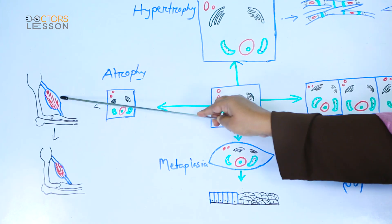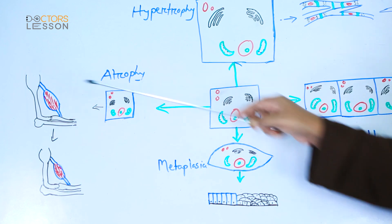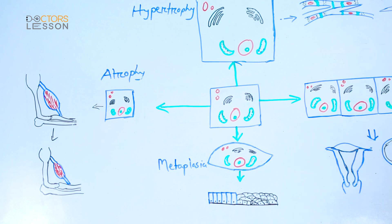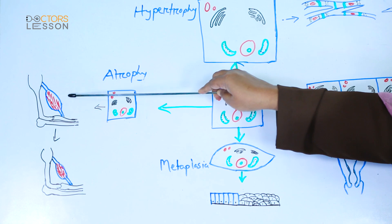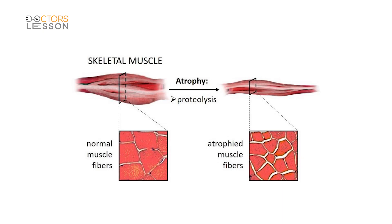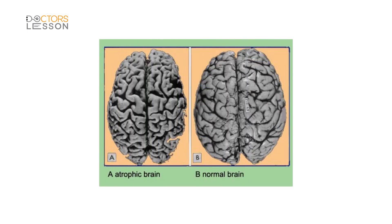Decreased workload causes skeletal muscle atrophy due to prolonged disuse, as seen in immobilized patients with a plaster cast — skeletal muscle fibers become atrophied, and increased bone resorption also leads to osteoporosis. Loss of innervation due to accidental cut injury or any neuropathic or myopathic disorder causes skeletal muscle fiber atrophy. Decreased blood supply to any organ such as the brain or heart due to vascular narrowing is also a cause of atrophy of these organs.